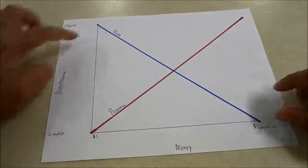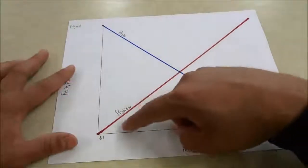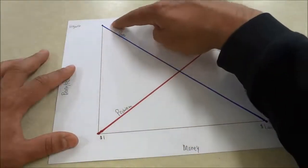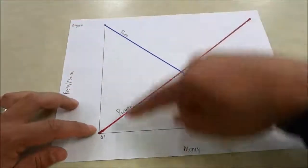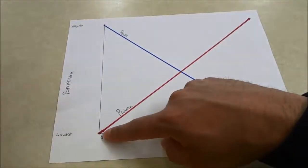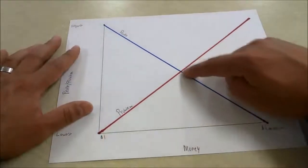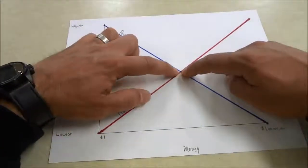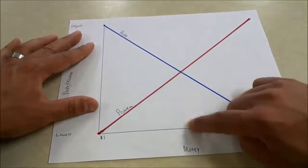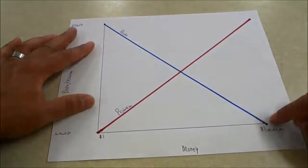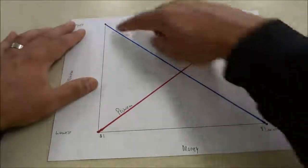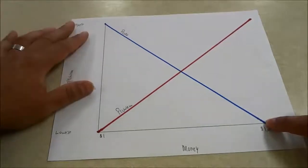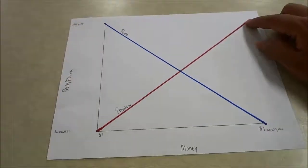If you look at this, anything that is going to earn you a low income, there are going to be many people willing to do that job and the problem is going to be very easy to solve. If there's a decent amount of people willing to do the job and the problem is decently difficult, you will make sort of average income. And if you want to make high income, you need very few people willing to do it and it must solve a really difficult problem.